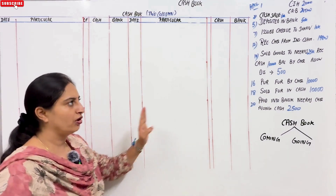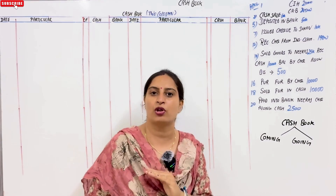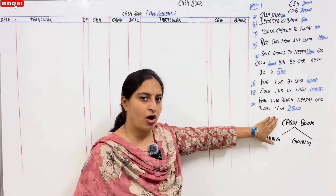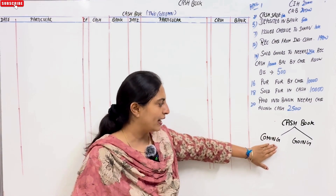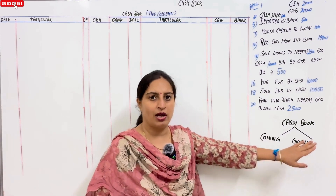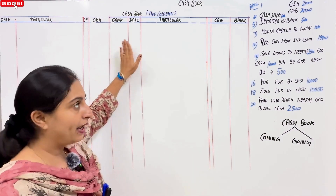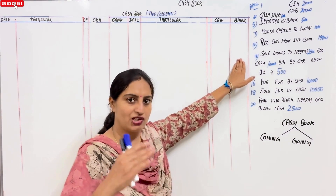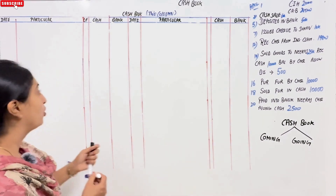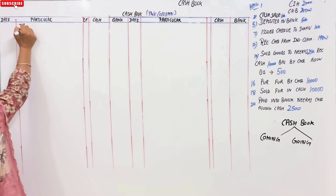Now we have to make the cash book. In every question, we follow a rule. The rule of the cash book: check whether something is coming in or going out, and identify which column — cash or bank. When money is coming in, you will enter it on the debit side to welcome it.